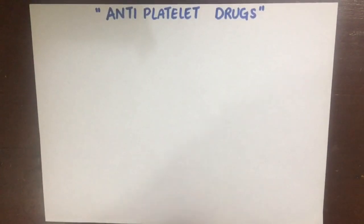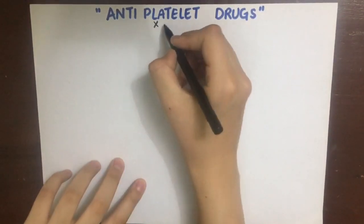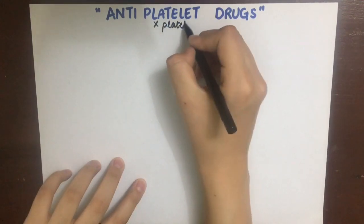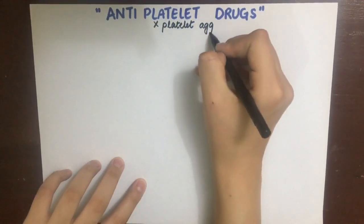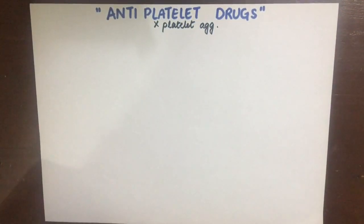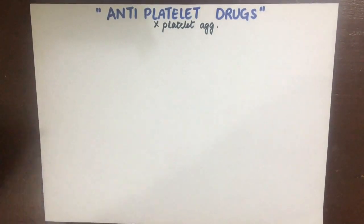Antiplatelet drugs inhibit platelet aggregation and thus prevent the formation of the primary platelet plug. To understand the mechanism and site of action of these drugs, let's review primary platelet plug formation.